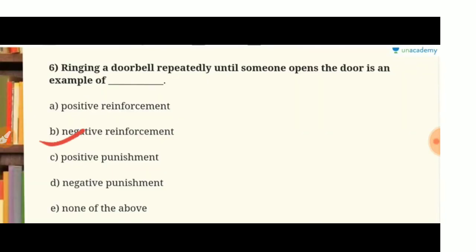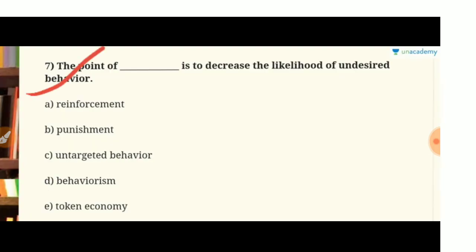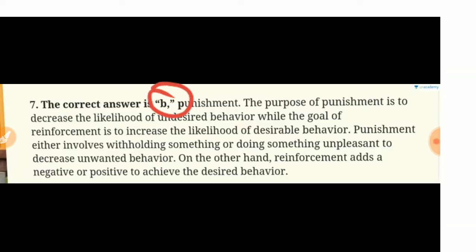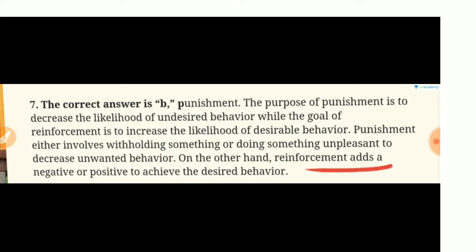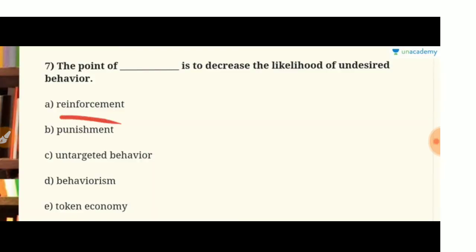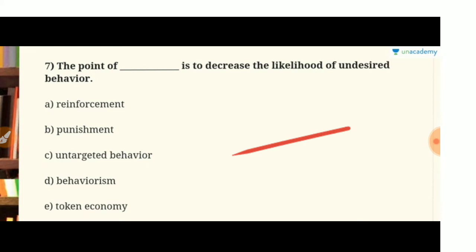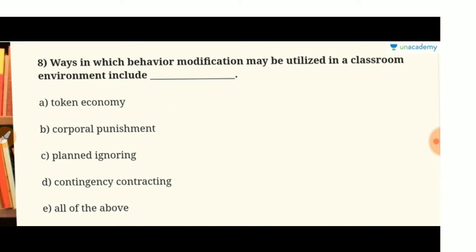Question 7: 'The point of blank is to decrease the likelihood of undesired behavior.' The answer is punishment. The main purpose of punishment is to decrease undesired behavior, whereas the goal of reinforcement is to increase the likelihood of desirable behavior. Punishment either involves withholding something or doing something unpleasant; reinforcement adds a negative or positive element to achieve desired behavior.